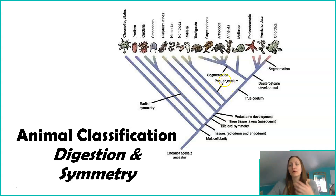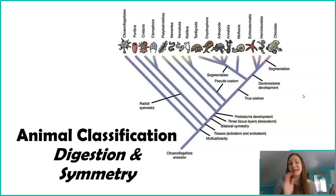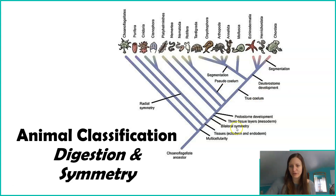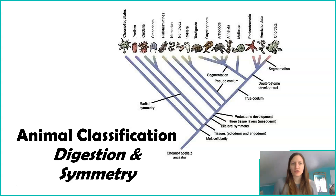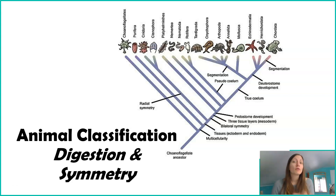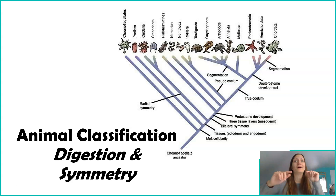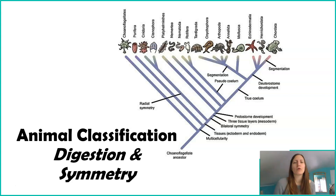Things like a pseudocoelom, or segmentation, or deuterostomes — what we're going to talk about in this video and in the next video is essentially what do these terms mean? What is bilateral symmetry? What is meant by mesoderm? We're going to explore those characteristics, and it's going to be a lot of new terminology. However, when we talk about each of the phyla individually, we're going to revisit these words a lot, so really practice with these terms. You're going to see them a lot more, and we're going to start applying them to different organisms.